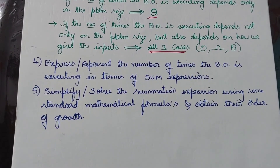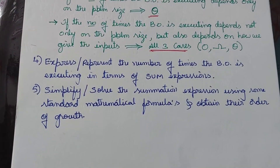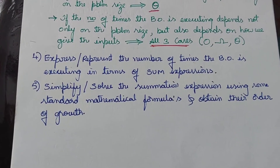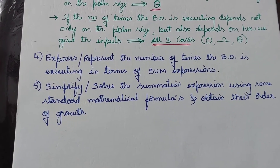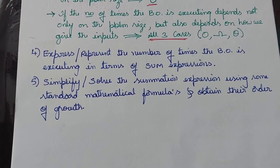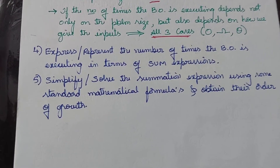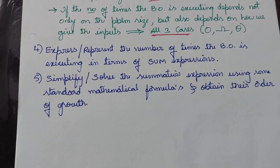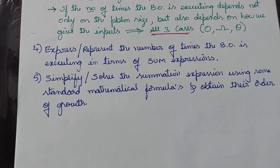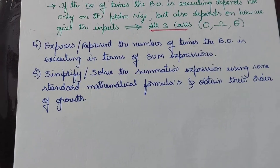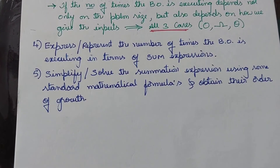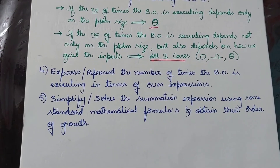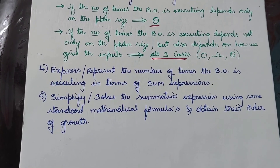The order of growth we obtain should belong to one of the basic efficiency classes. The order of growth should be one of: 1, n, log n, n log n, n², n³, 2^n (exponential), or n! (factorial). These are the five general steps used when analyzing a non-recursive algorithm.